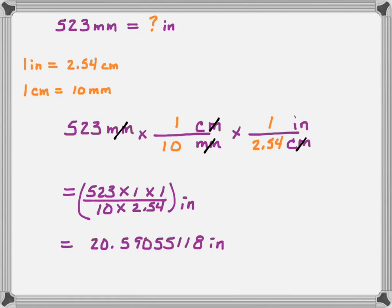My calculator gives me 20.59055118 inches. I want to place this in proper significant figures — I begin with 3 significant figures in my number 523, so my final answer also needs 3 significant figures, which means I go to 20.5. I look at the next digit, which is 9 — 9 is greater than 5, so I round the 5 up to 6, giving me an answer of 20.6 inches. So 523 millimeters is equal to 20.6 inches.